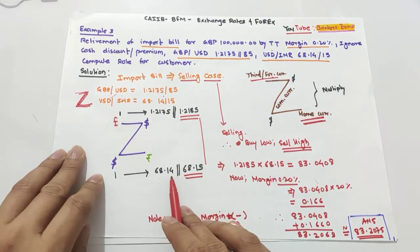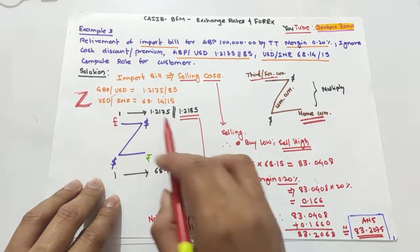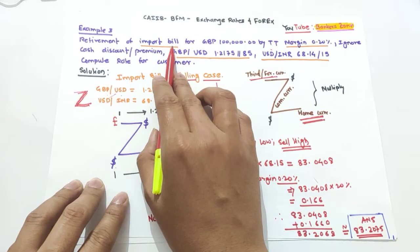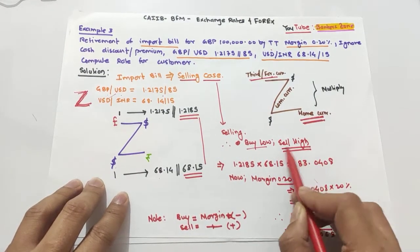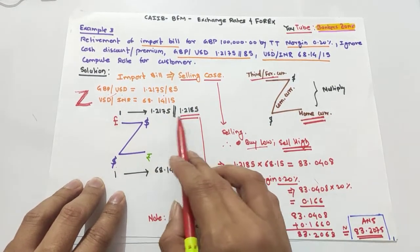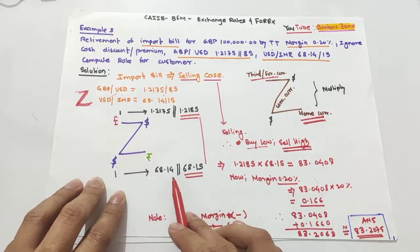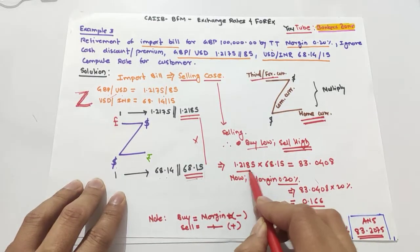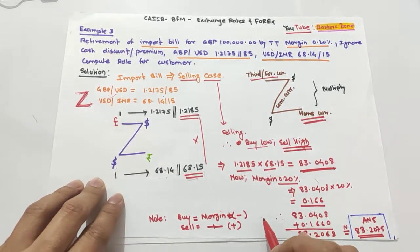To find the required rate, we multiply the right-side values. Since this is a selling case, the principle is 'buy low, sell high,' so we take the maximum values — that is 1.2185 and 68.15. Multiplying these gives us 83.0485, which is our base rate.